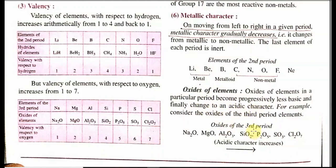Let us compare the example of the third period: sodium oxide is basic, but chlorine oxide is acidic. This demonstrates the trend of oxides changing from basic to acidic character as we move from left to right across a period.